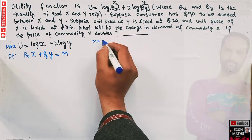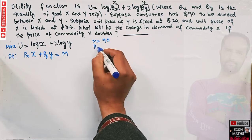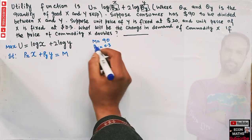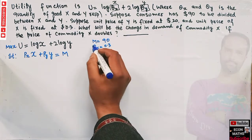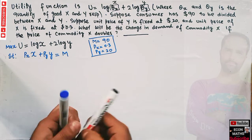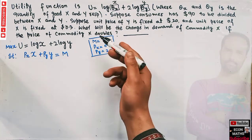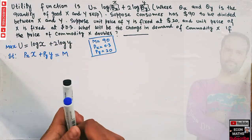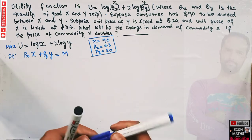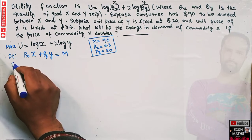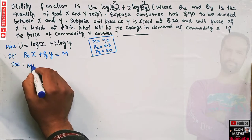We are given: income M = 90 dollars, price of good X Px = 0.3, and price of good Y Py = 20 dollars. Let's first form the demand function for good X. To maximize the objective function subject to the budget constraint, we use the tangency condition — the first-order condition for optimality requires that the marginal rate of substitution between X and Y equals the price ratio.